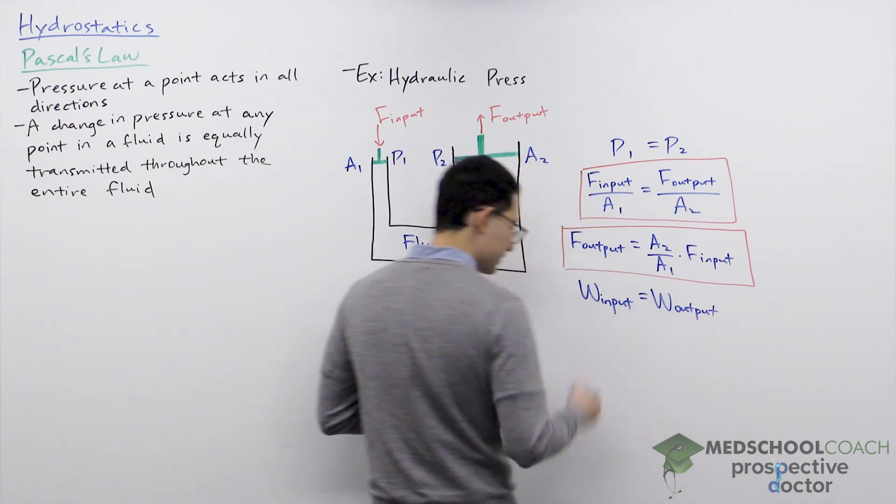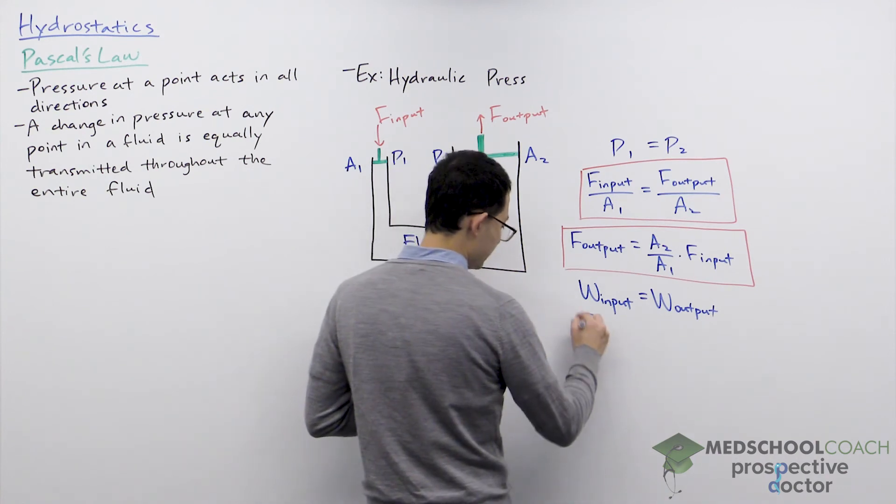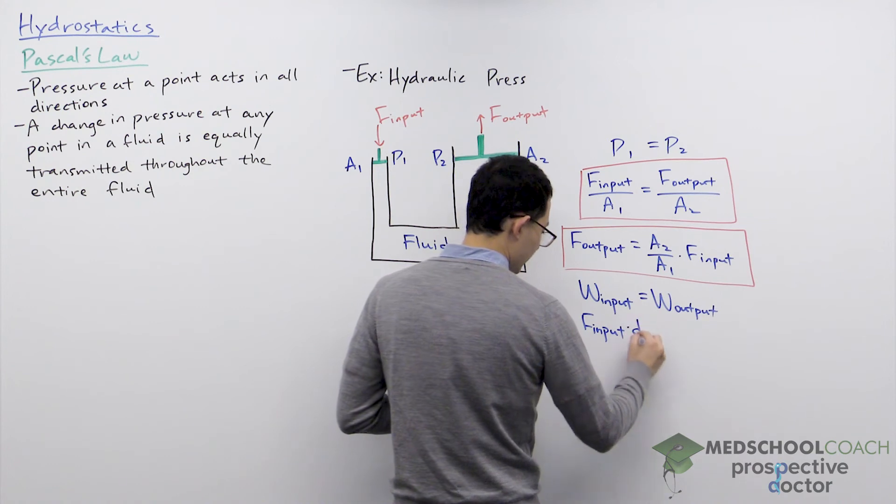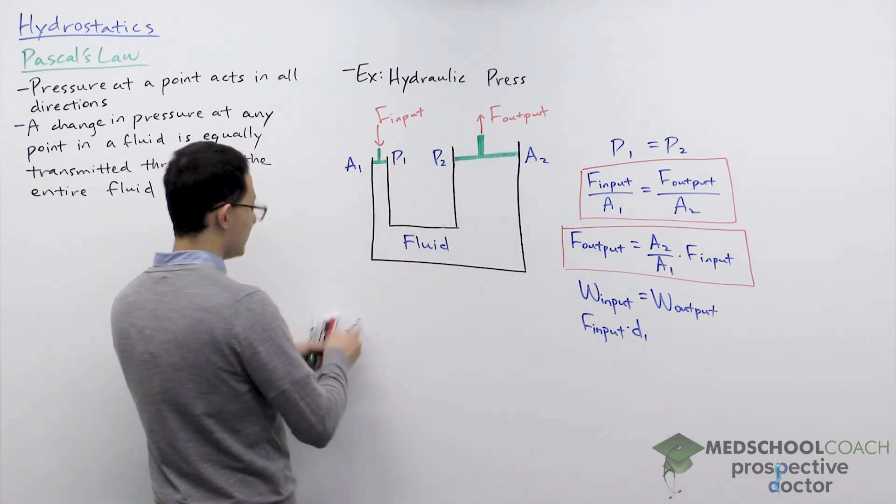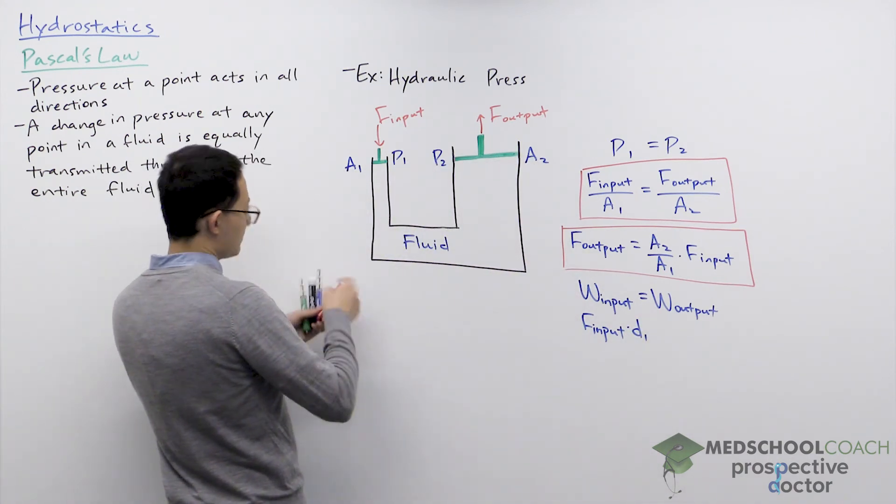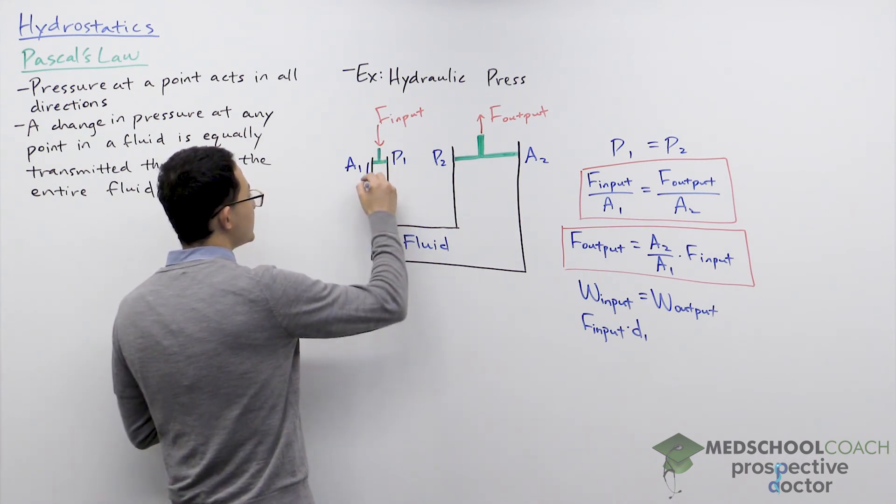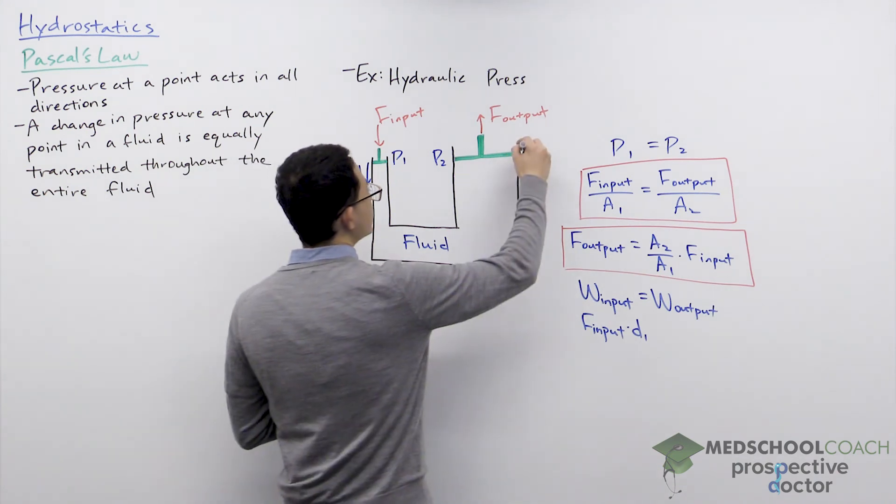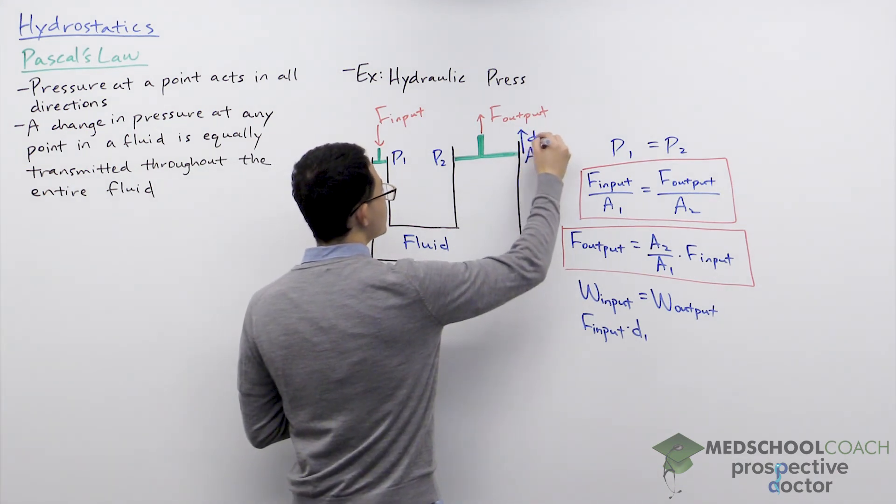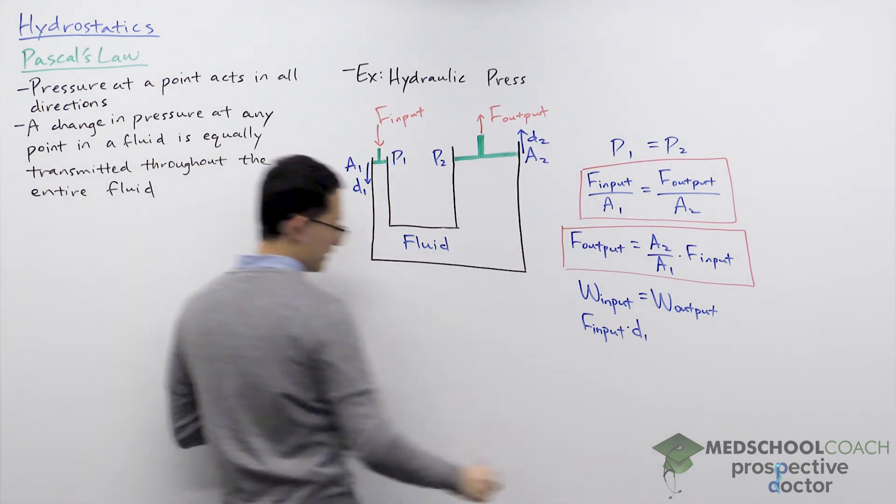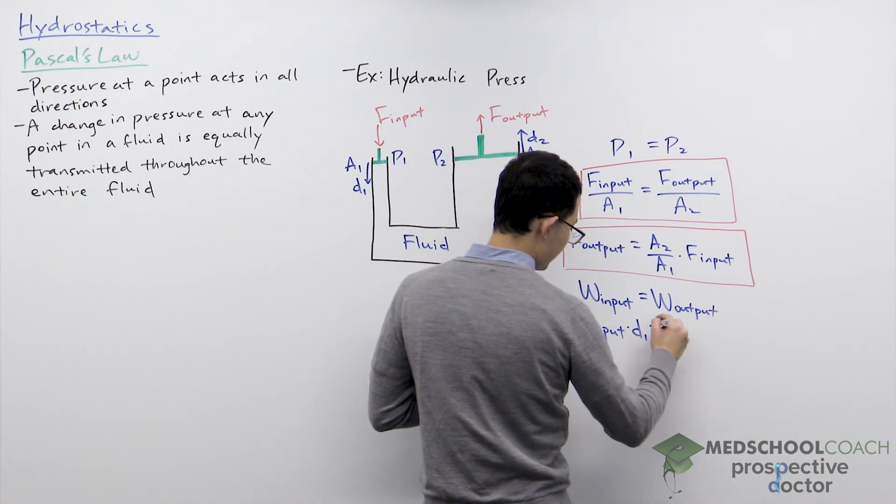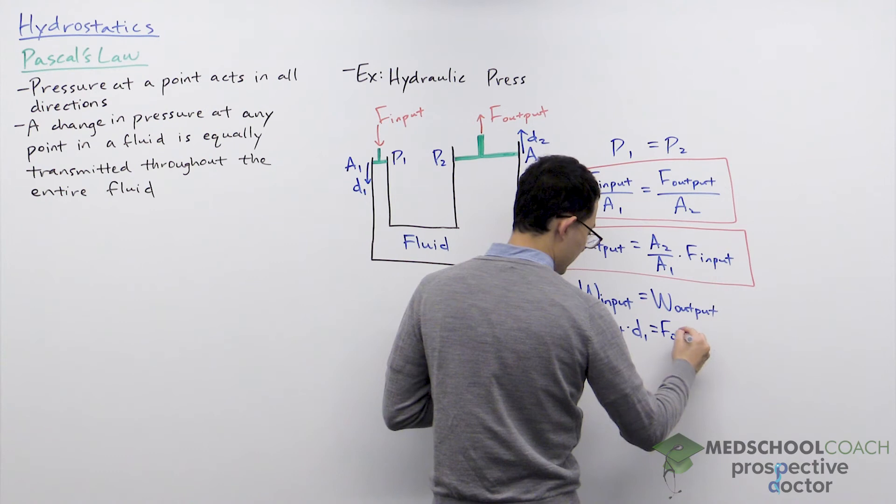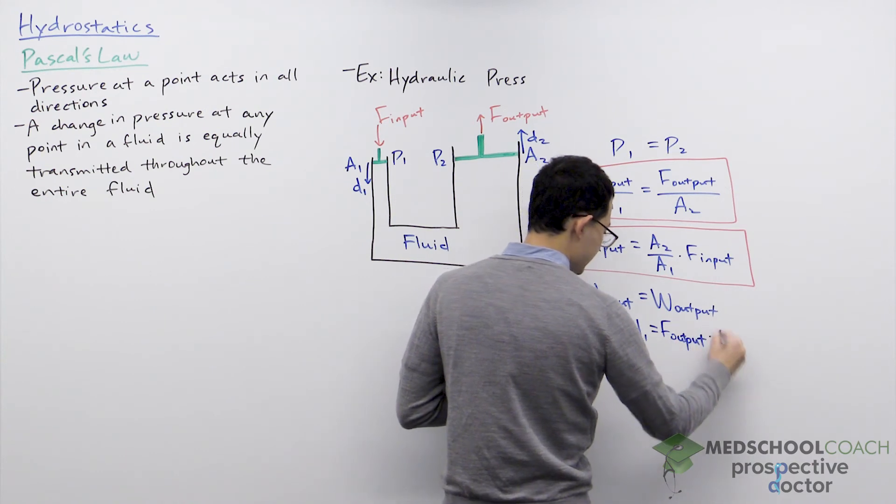And since work we know is equal to force times displacement, now you can take the input force, multiply that by the displacement at point one, which essentially is going to be how far this piston moves down. Right? This is D1 and D2 is how far this piston moves up. And then you have F output times D2.